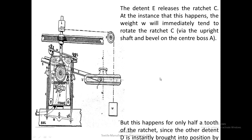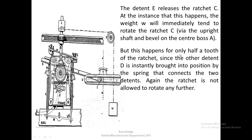This will try to rotate the upright shaft, and because of the bevel on the shaft, try to rotate the ratchet, but this happens for only half a tooth. The rotation is not continuous because the other detent D is instantly brought into position by its spring. The spring connects both detents, and once E is out of position the spring immediately brings detent D into position, not allowing any further rotation.